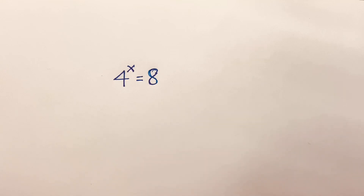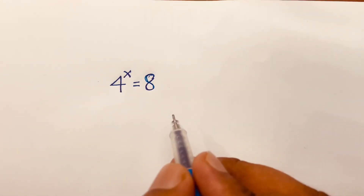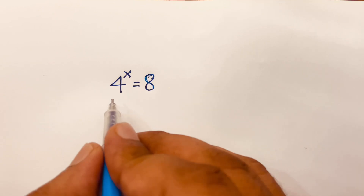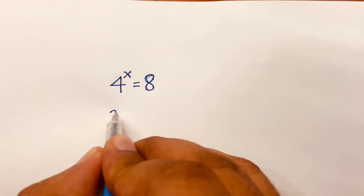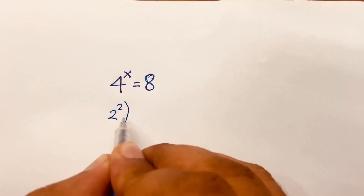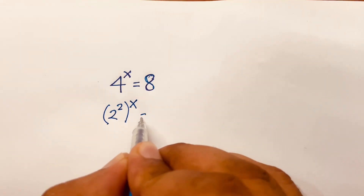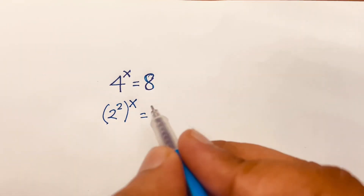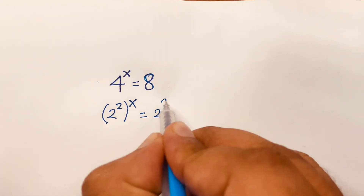How to solve this exponential equation? 4 to the power x is equal to 8. So 4 to the power x can be written as 2 to the power 2, bracket power x, is equal to 8, which is 2 to the power 3.